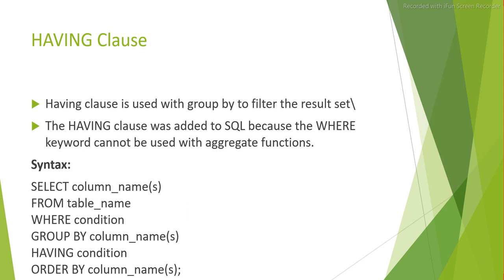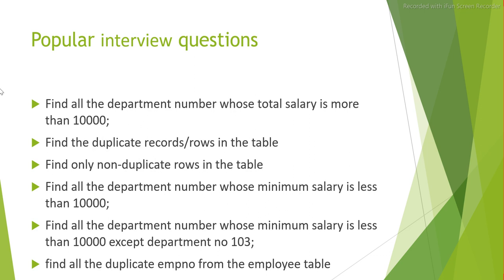Here's a quick agenda for this complete session: we will try to understand what the HAVING clause is, and we will also look at how it is different from the WHERE clause — why do we use HAVING clause when we already have the WHERE clause, whether the WHERE clause is able to fit the purpose we want to achieve, and if not, then how the HAVING clause is used and how it works internally.